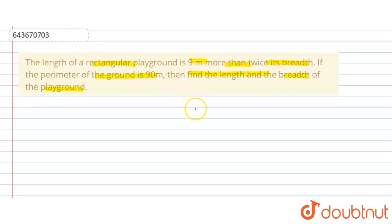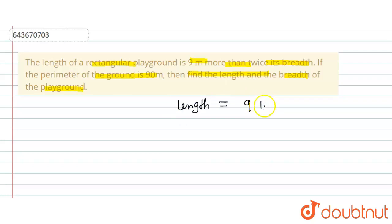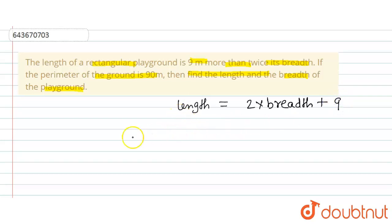So the length is 9 more than twice its breadth — that is, length equals 2 times breadth plus 9. This is the condition for length. The perimeter is also given as 90 meters.